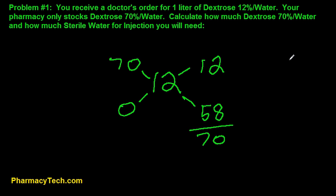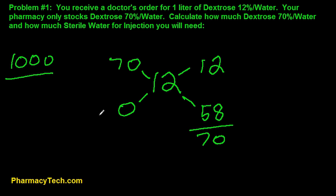Next step is we're going to divide what we're looking for in mils — our total volume, which is 1,000. And we're going to divide 1,000 by our number here, 70. Rounding off, that will give us 14.3.